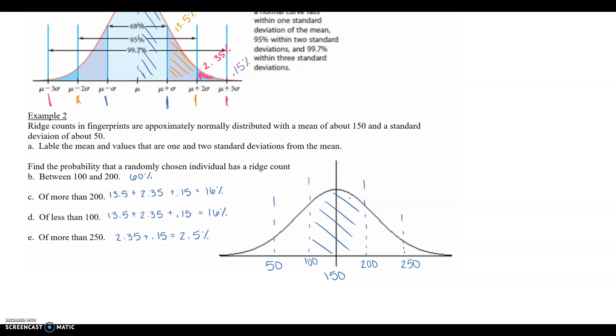So for the probability between 100 and 200, that's within the first standard deviations, so that's kind of easy - that's just 68 percent. Of more than 200 is going to be more than 200, so that's all of this. So that's going to be 13.5 plus the 2.35 and then also, if we drew in the third standard deviation, the 0.15. So the probability that a randomly chosen individual has a ridge count more than 200 is 16. Similarly we're going to the left - of less than 100 is going to be 16. And then for more than 250, you've got the 2.35 but you also have that 0.15 percent.